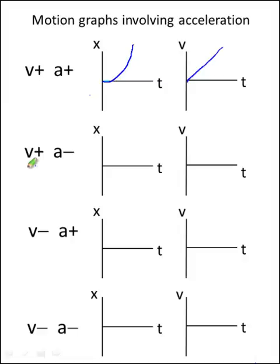So here we have a situation where the object is going to be getting slower. It's experiencing positive velocity, but a negative acceleration. And we can go ahead and add that up here. This was getting faster.